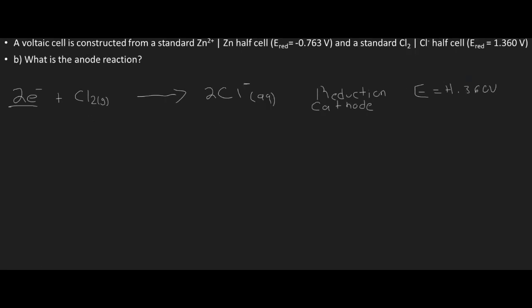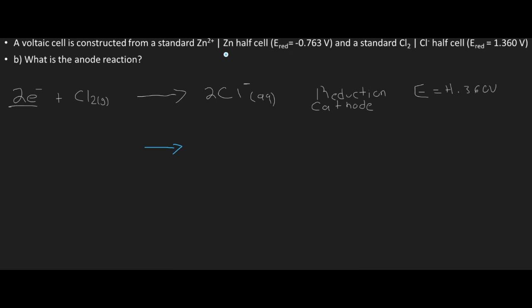Next question: what is the anode reaction? The half cell with the lowest reduction potential is the anode — that's zinc. We flip the cell in the oxidation direction: solid zinc metal goes on the reactant side and the zinc ion Zn²⁺ goes on the product side. Balancing mass: there is one atom of zinc on both sides, so no coefficient is needed.